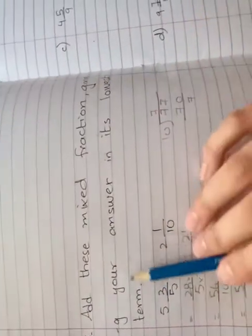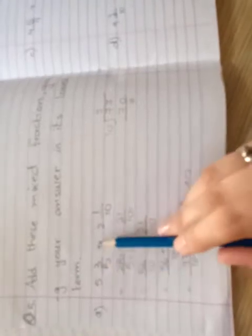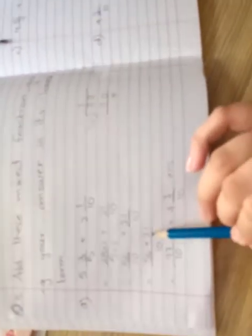Add these mixed fractions, giving your answer in its lowest term. Add fractions and convert the mixed fractions to improper. 5 times 5 is 25, 25 plus 3 is 28, so 28 by 5. Plus, 10 times 2 is 20, 20 plus 1 is 21, so 21 by 10. For the common denominator in 5 table: 10. 5 twos are 10, so multiply by 2. 28 times 2 is 56. 10 is common, and 56 plus 21...